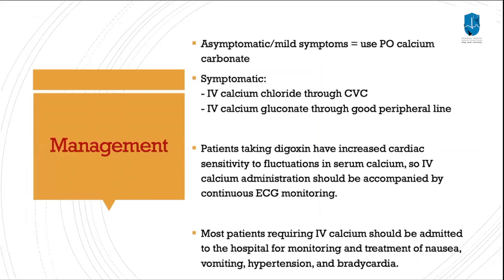For management of hypocalcemia: if asymptomatic or mildly symptomatic, use oral calcium carbonate. If symptomatic, use calcium chloride through a central line or calcium gluconate through a good peripheral line. Patients taking digoxin have increased cardiac sensitivity to calcium fluctuations, so IV calcium administration should be combined with continuous ECG monitoring. Most patients requiring IV calcium should be admitted to hospital for monitoring and treatment of nausea, vomiting, hypertension, and bradycardia.